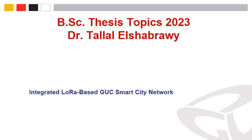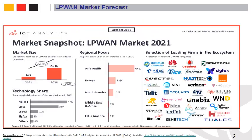Hello guys, in this video I will give you an overview of the project titled 'Integrated LoRa-based GUC Smart City Network'. Let's start with the LPWAN market forecast. LPWAN stands for Long-Range Low-Power Wide Area Networks, and the market snapshot from 2021 envisions a five-year cumulative growth at the scale of 33%.